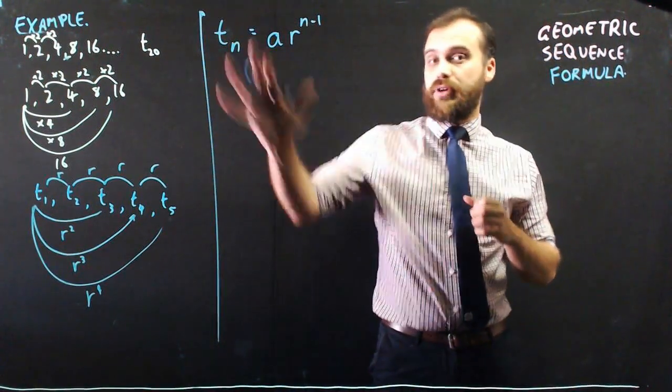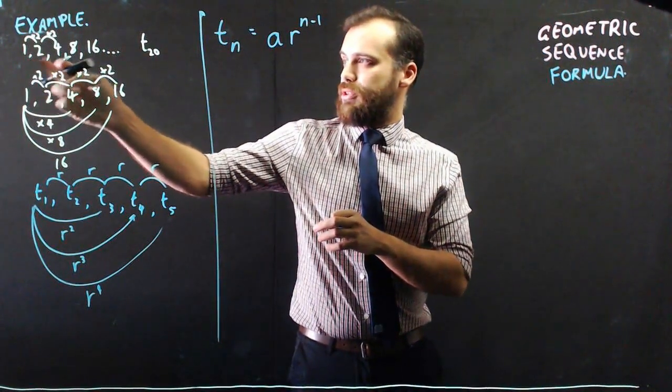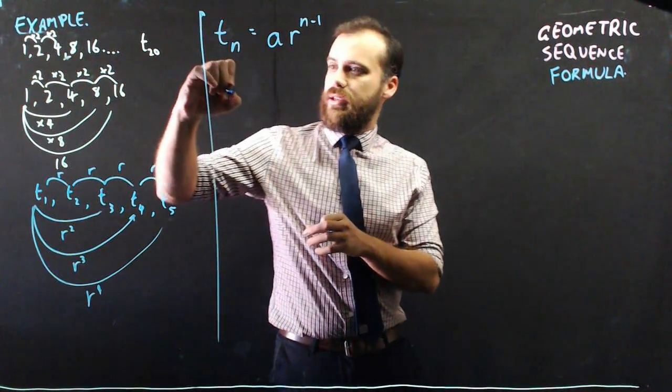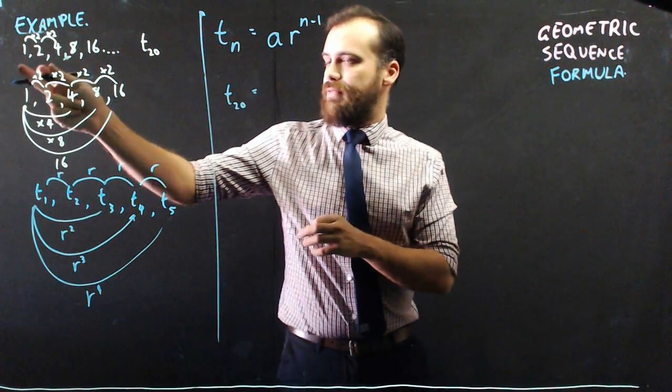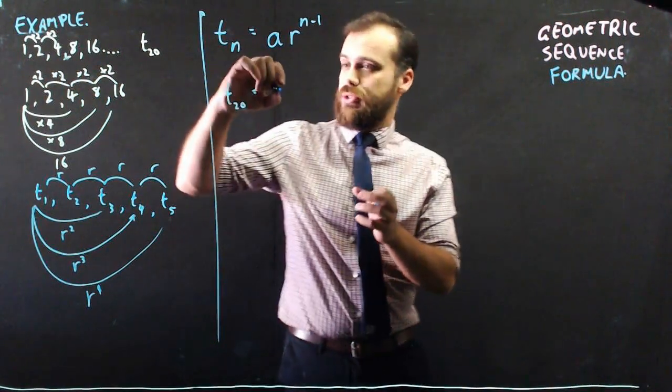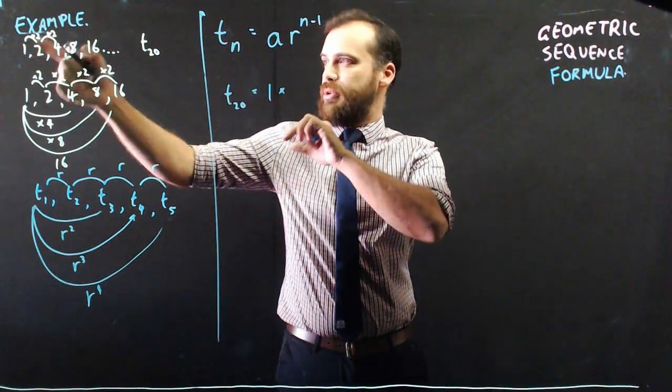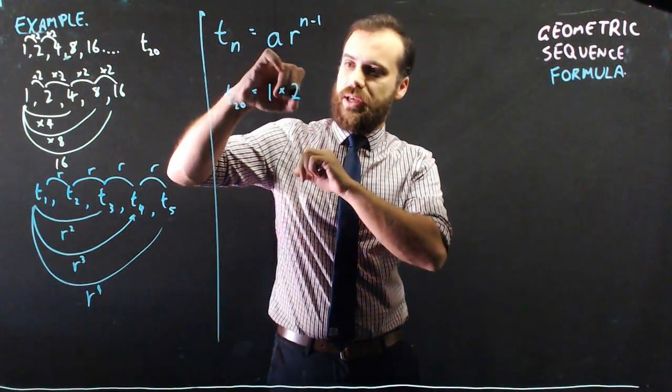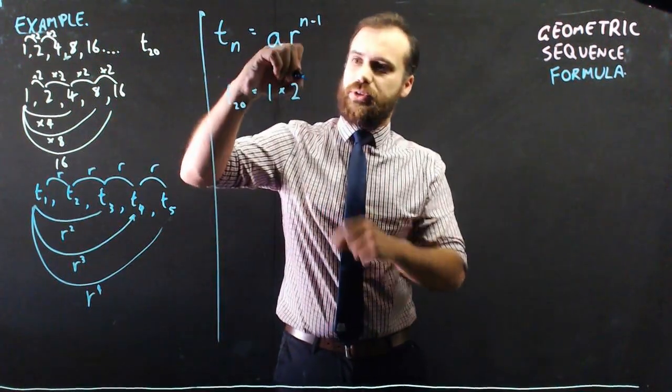So, now that I have a really nice, neat formula, and I know how to get there, if I've got this one here, then if I want to know what term 20 is, I take the A value, which is the first term, which is 1, and I multiply it by R, the common ratio, which is 2 in this case, to the power of N minus 1, which is 19.